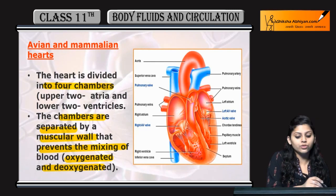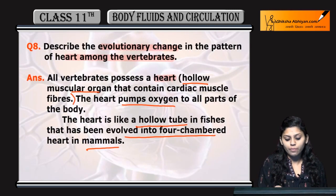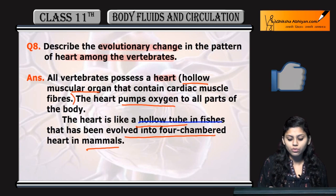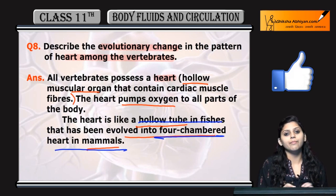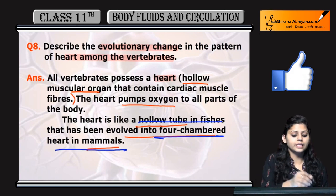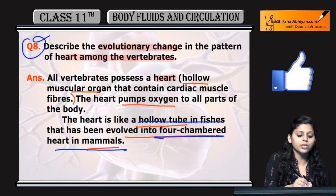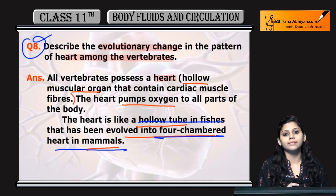So, the heart evolved in this way — from a hollow tube in fishes to a four-chambered heart in mammals. This is all about question number eight.